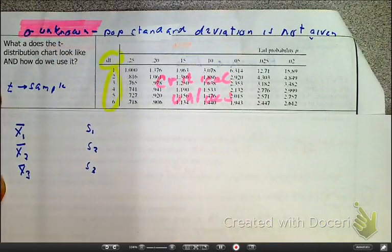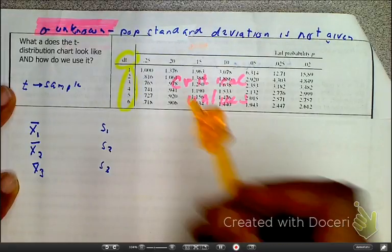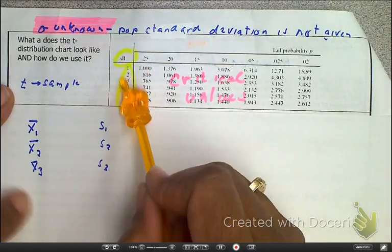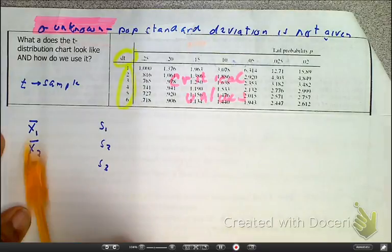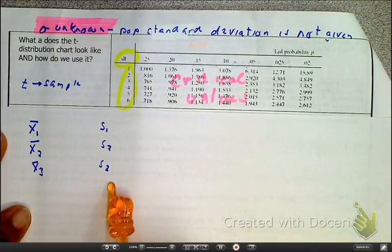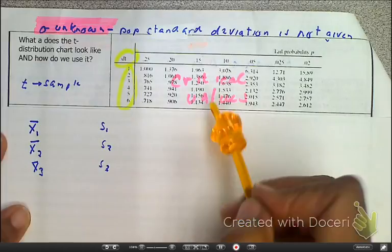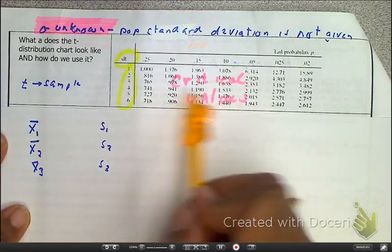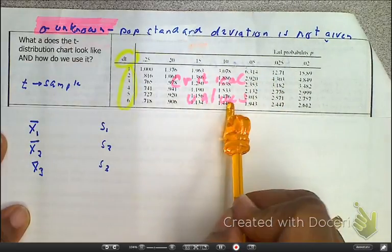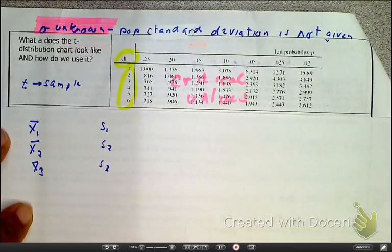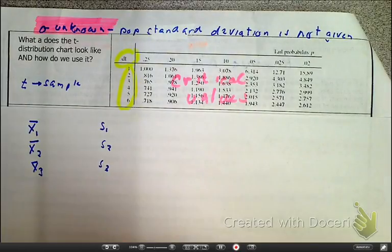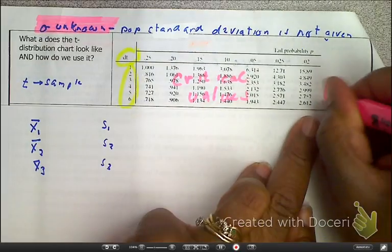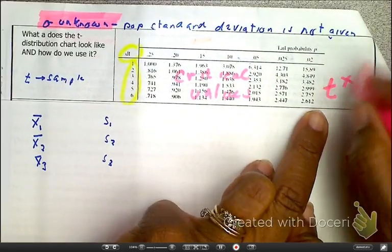A couple of other things to pay attention to: the reason for the degree of freedom is to help us with the variability that will occur given that we have sample-to-sample differences, because there's going to be some variability. Also, remember your chart looks a little different — inside the body are our critical values, and our critical values for this are our T star.